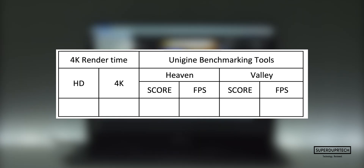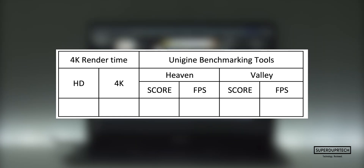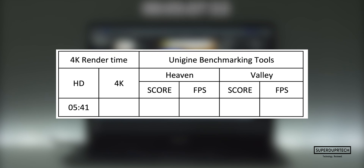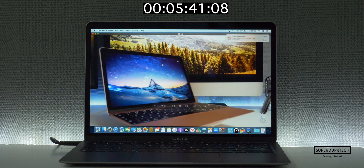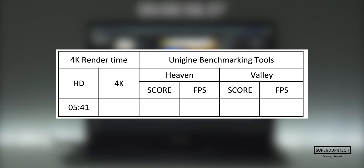Next I did a timed export with Final Cut Pro, exporting a 5 minute 24 second video file to H.264 at both full HD 1920x1080 and 4K 3840x2160. It is worth noting that I tested this with background rendering turned off. The HD export came in at around 5 minutes and 41 seconds, whereas the 4K export took a little longer at around 6 minutes and 16 seconds.